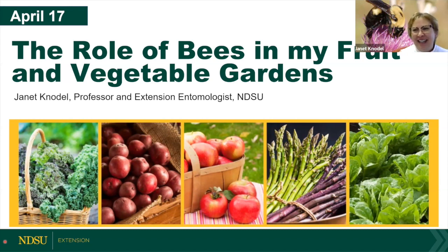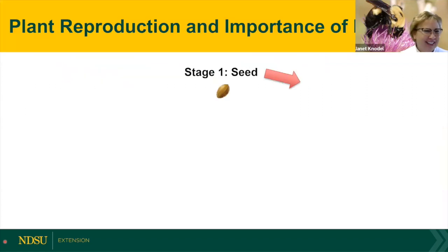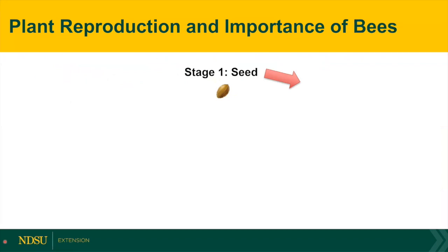Thank you, Scott. Good afternoon, everyone. Thank you for joining today and we're going to learn about bees. So first, I got to cover pollination. It is the deposit of pollen grain from the anther, which is the male structure, onto the pistil, which is the female structure. It can be on the same plant species or it can be transferred between separate flowers. Successful pollination results in viable seeds and a fruit, which we enjoy eating. Most of the field crops are pollinated by insect or wind.